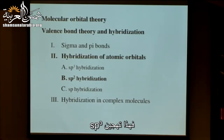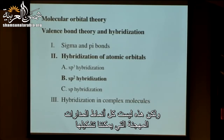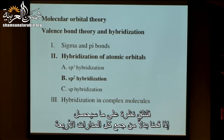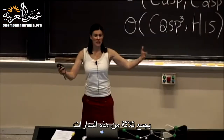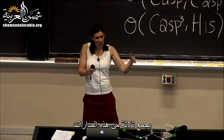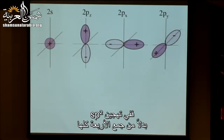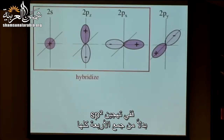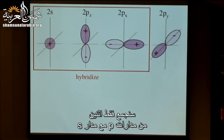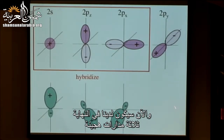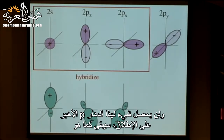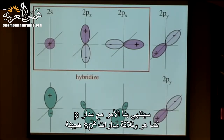That's sp3 hybridization, but those aren't the only type of hybrid orbitals we can form. If instead of combining all four orbitals we just combine three — two p orbitals with the s orbital — we get sp2 hybridization. We end up with three hybrid orbitals, and the last p orbital is left completely untouched. So we have one unchanged p orbital and three hybrid sp2 orbitals.